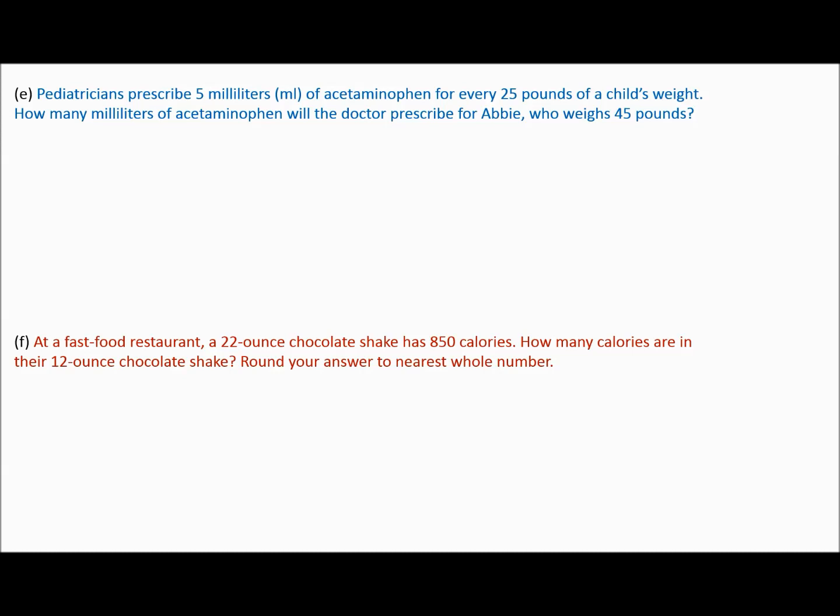So now we're back to word problems. Pediatricians prescribe 5 milliliters of acetaminophen for every 25 pounds of a child's weight. How many milliliters would the doctor prescribe for Abby who weighs 45 pounds? The highlight here, we know that 5 milliliters goes with 25 pounds. And on the other hand, we don't know how many milliliters goes with 45 pounds. That's our two separate fractions. The yellow fraction says 5 milliliters goes with 25 pounds. Now the next fraction, we better have milliliters on top and pounds on the bottom, just like we did here. So how many milliliters? We don't know. Let's call it x, but we know the pounds is 45.